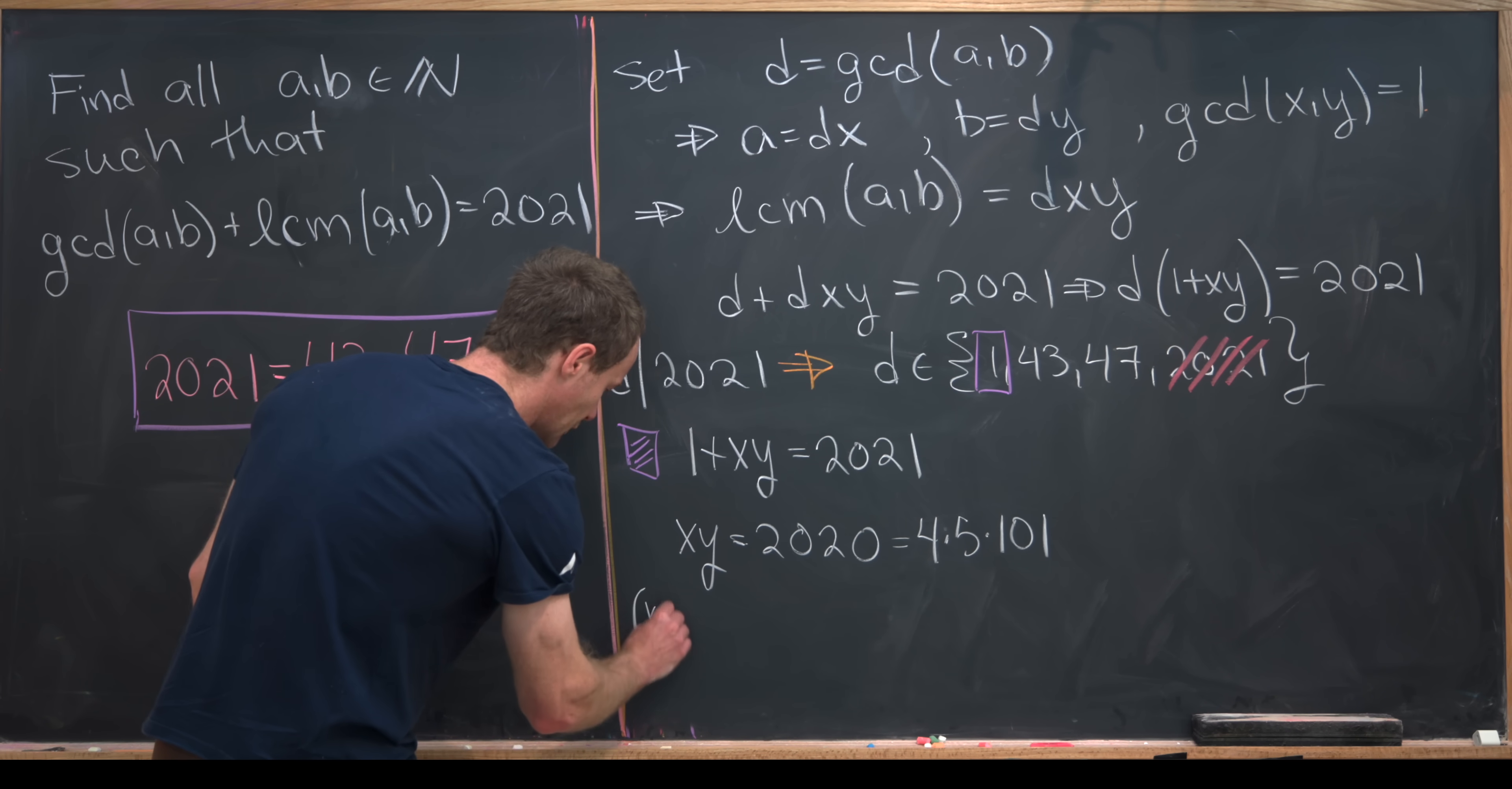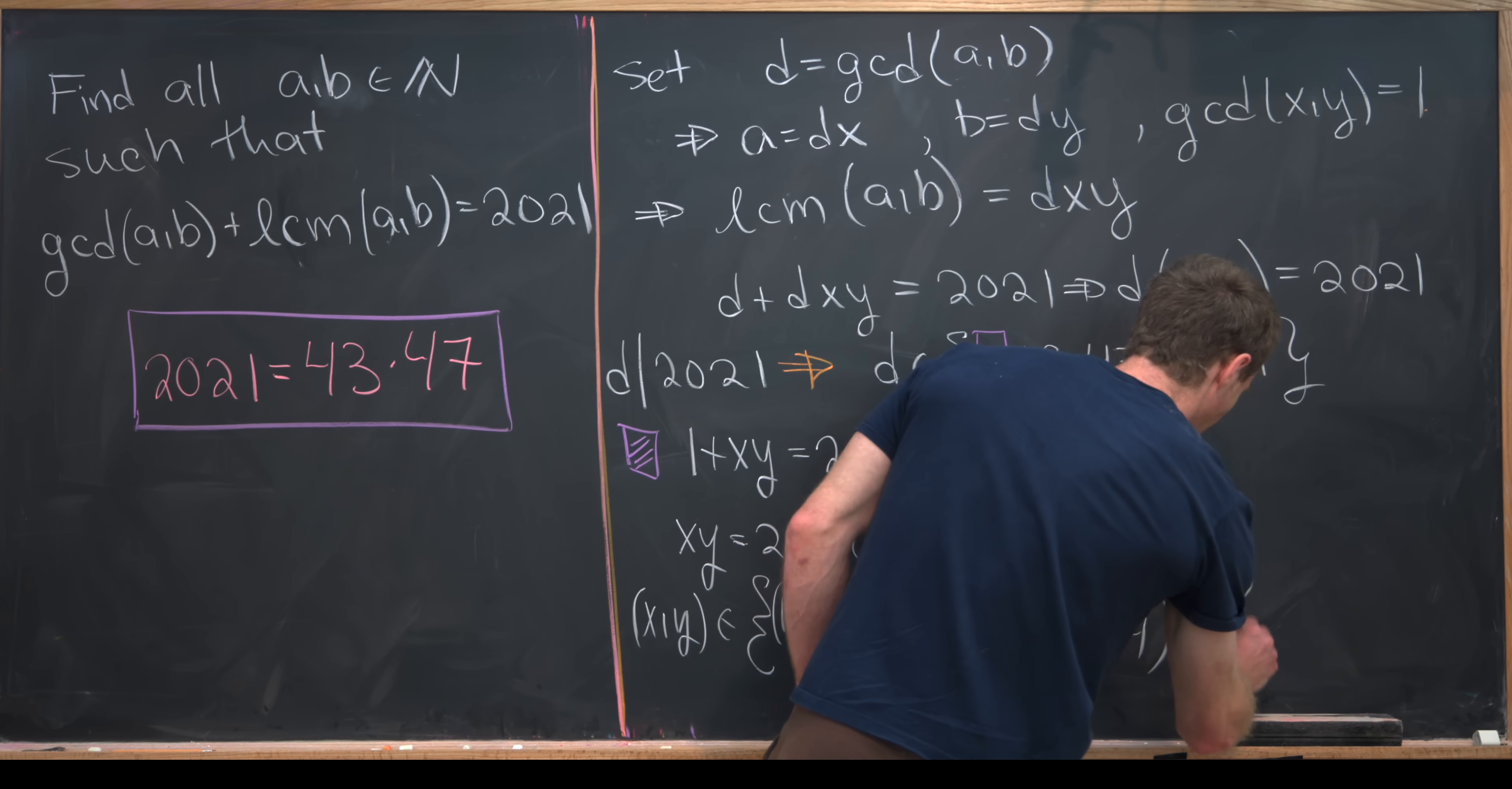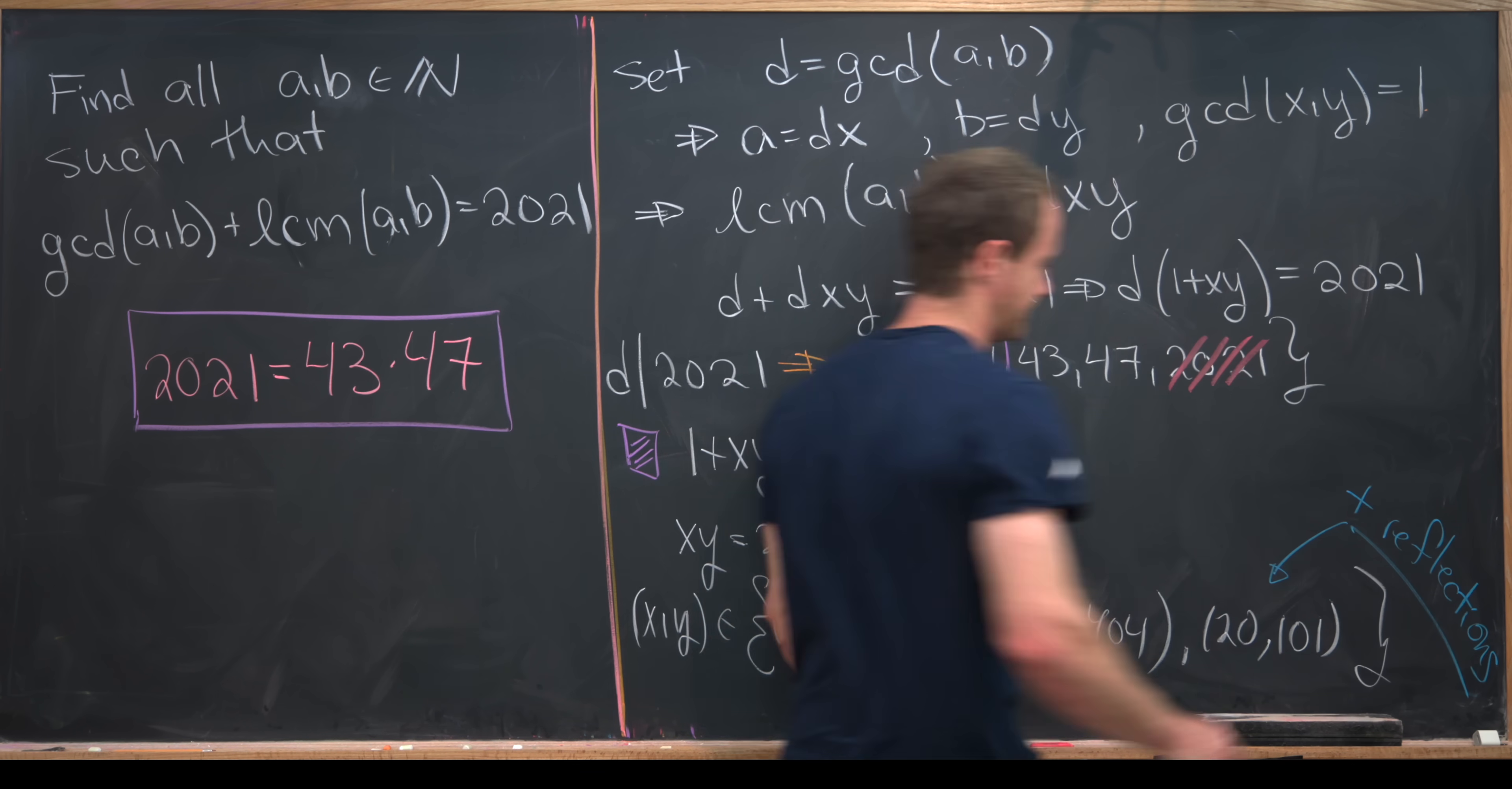From here we can take X and Y from the following set. It could be equal to 1 comma 2020, it could be equal to 4 comma 505, it could be equal to 5 comma 404, and finally we can also have 20 times 101. That's not quite everything. Notice that we have also all of the reflections of these, so we could also have 2020 comma 1, 505 comma 4, and so forth. I'll just put here plus all of the reflections of these ordered pairs.